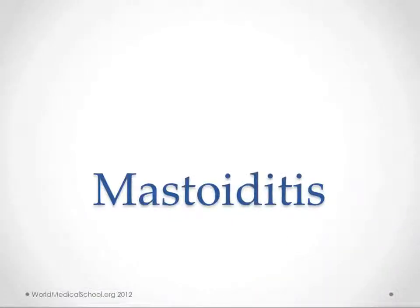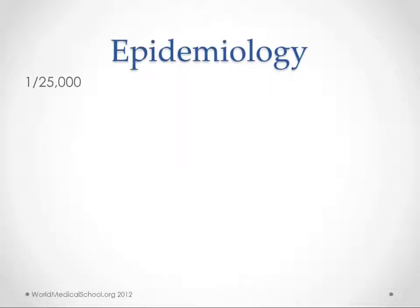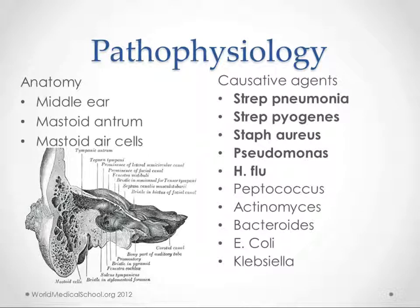Hi, this is Kendrick with worldmedicalschool.org. We're going to talk about mastoiditis. This is a lot less common than I thought it was — about 1 in 25,000 per year incidence rate. It's not showing up quite as much as it used to since the advent of treating acute otitis medias with antibiotics, and essentially all mastoiditis comes from a complication of acute otitis media.